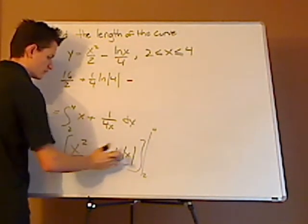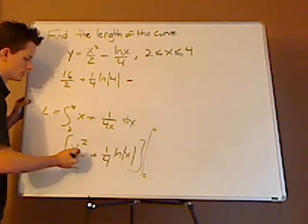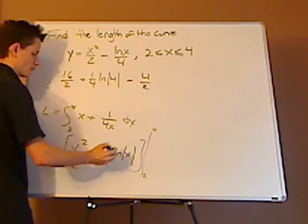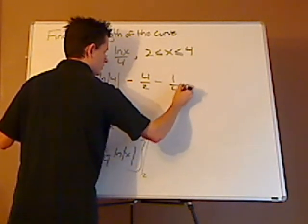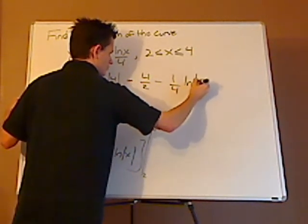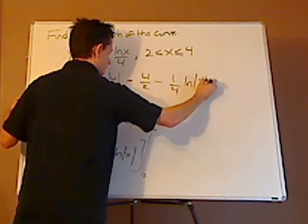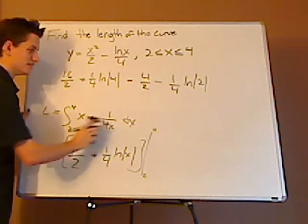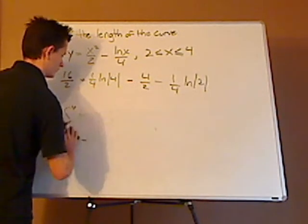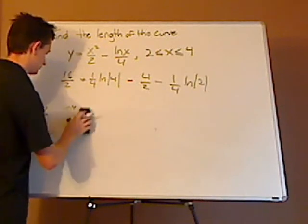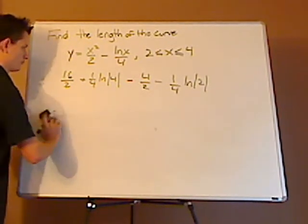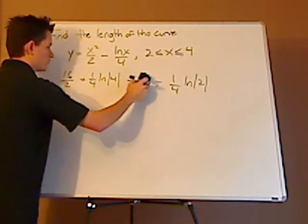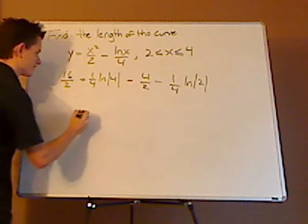Minus, and it's going to be this whole thing minus. So this is going to be minus 4 over 2 minus 1 fourth natural log 2. Now I'm going to erase this. 16 over 2 minus 4 over 2 gives me 12 over 2, which is a 6.